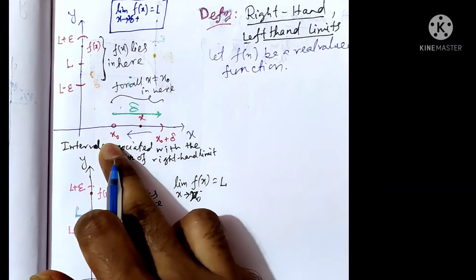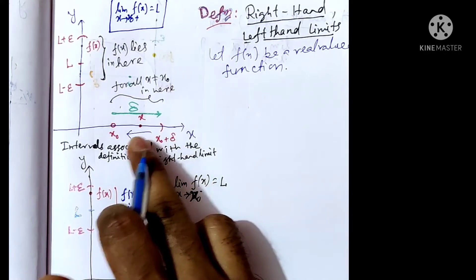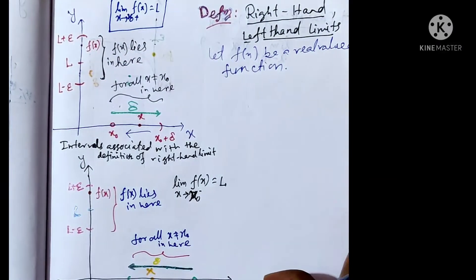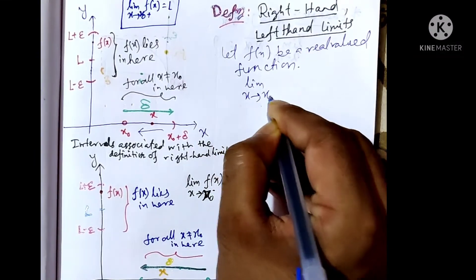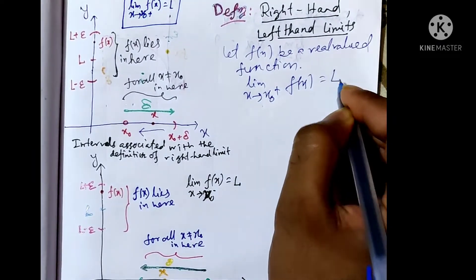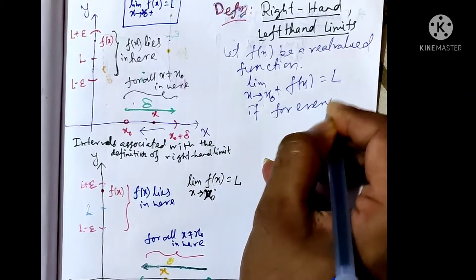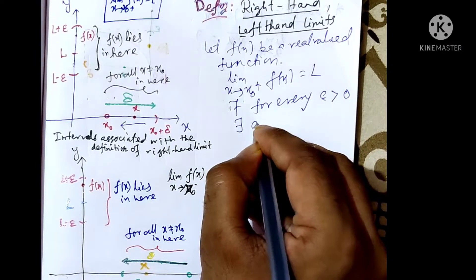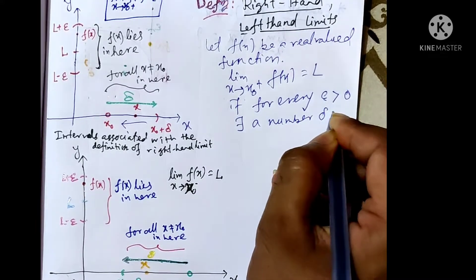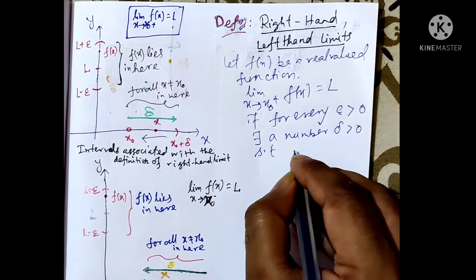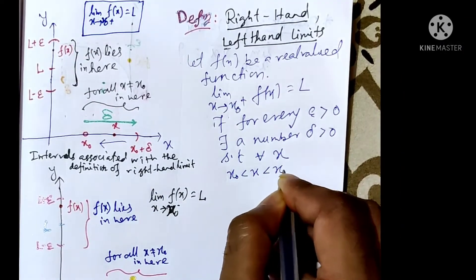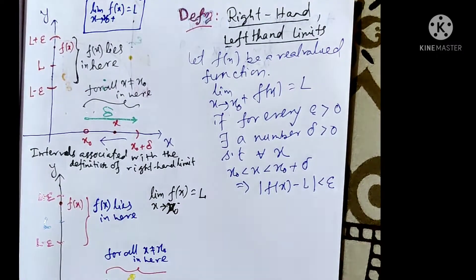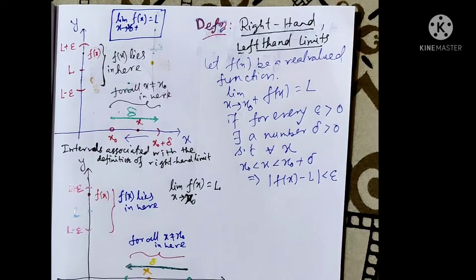If the right-to-left limit as x tends to x₀ exists and equals l, then we say that f(x) has a right limit. Mathematically, the limit as x tends to x₀⁺ of f(x) equals l if for every epsilon greater than 0, there exists a number delta greater than 0 such that for all x, x₀ less than x less than x₀ plus delta implies |f(x) − l| less than epsilon. If this happens, we say that f(x) has a right limit.